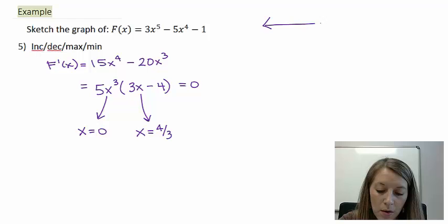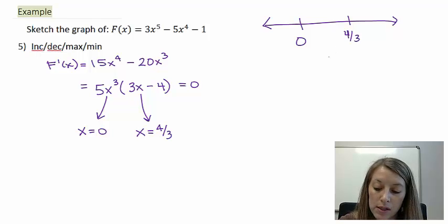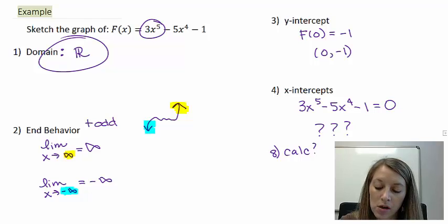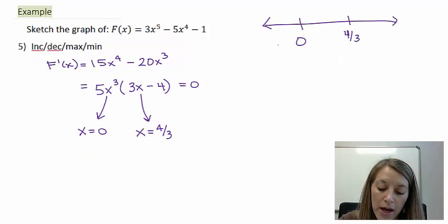So those are the two numbers that I'm going to put on my number line. And if my domain had any restrictions, then I would need to include those there. But our domain did not have any restrictions. It is all real numbers. So I need to test points in between these here.